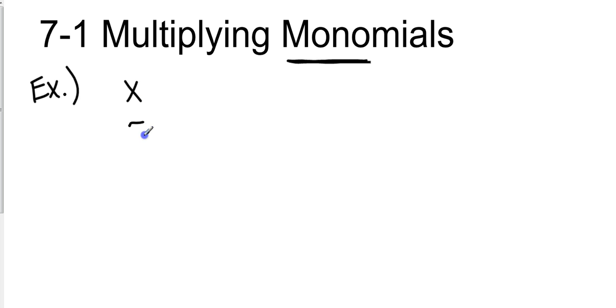So examples of monomials would be the letter x is a monomial. The number 7 would be a monomial, x to the second power would be a monomial because they are connected and there's no separation of addition or subtraction in between them.